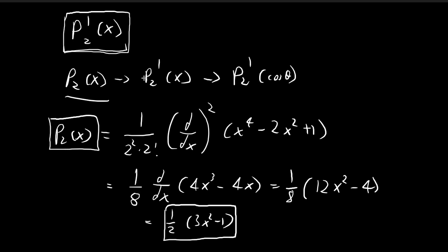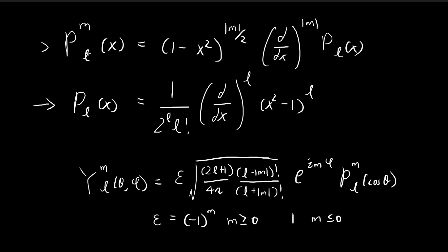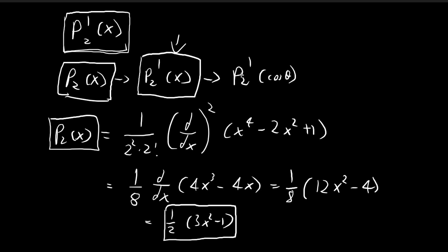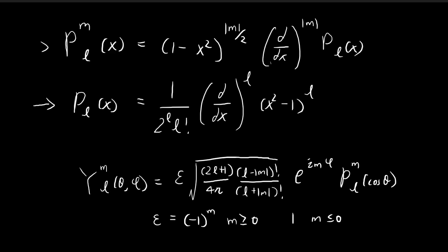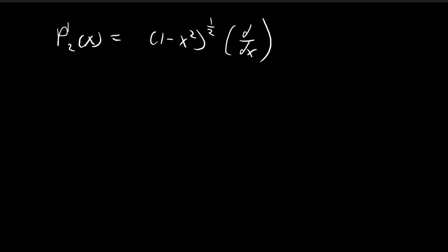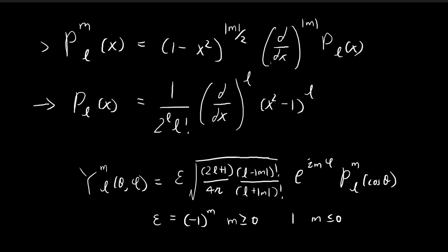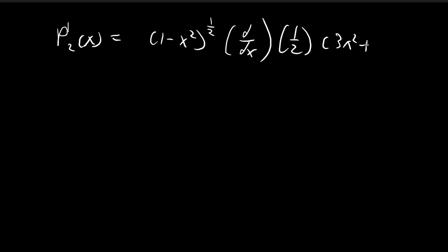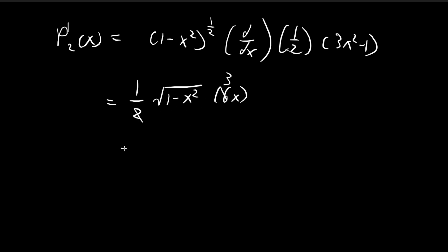Now we find the associated Legendre polynomial P₂¹(x). Going back to the formula, we have (1−x²)^(m/2) times the m-th derivative of P_l(x). With m=1, this is (1−x²)^(1/2) times d/dx of (1/2)(3x² − 1). Pulling the 1/2 outside and differentiating 3x² gives 6x. The constant terms cancel, leaving P₂¹(x) = 3x√(1−x²).